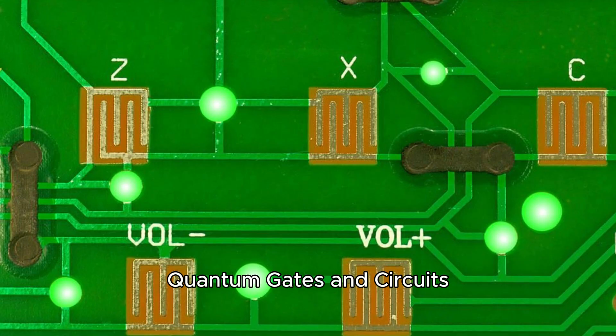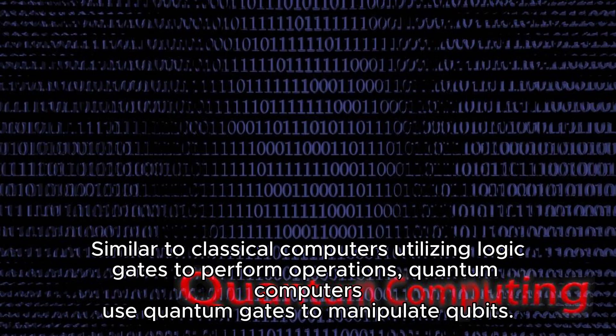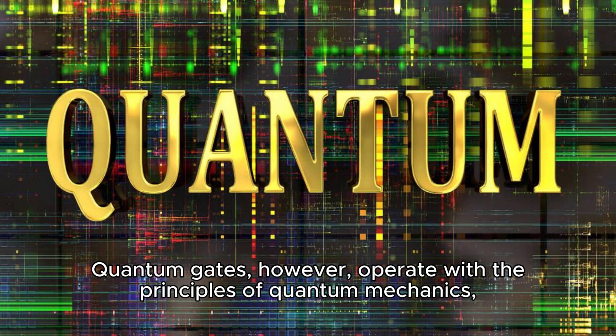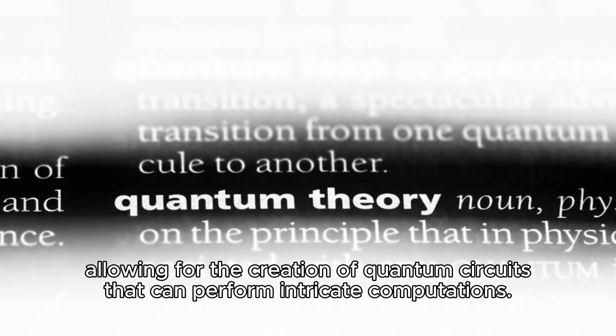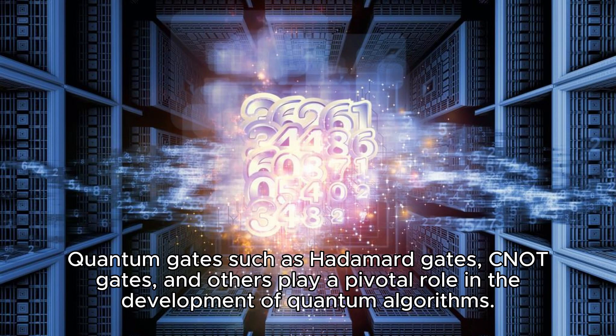Quantum Gates and Circuits. Similar to classical computers utilizing logic gates to perform operations, quantum computers use quantum gates to manipulate qubits. Quantum gates, however, operate with the principles of quantum mechanics, allowing for the creation of quantum circuits that can perform intricate computations. Quantum gates such as Hadamard gates, CNOT gates, and others play a pivotal role in the development of quantum algorithms.